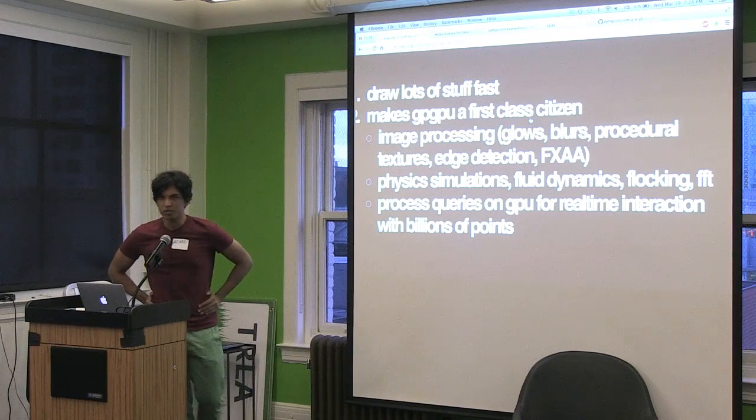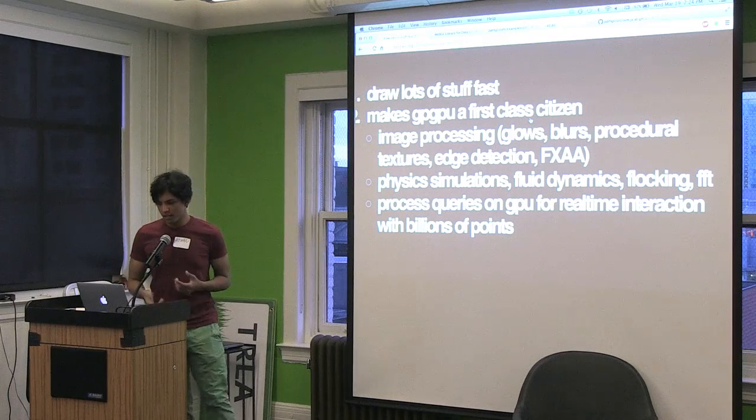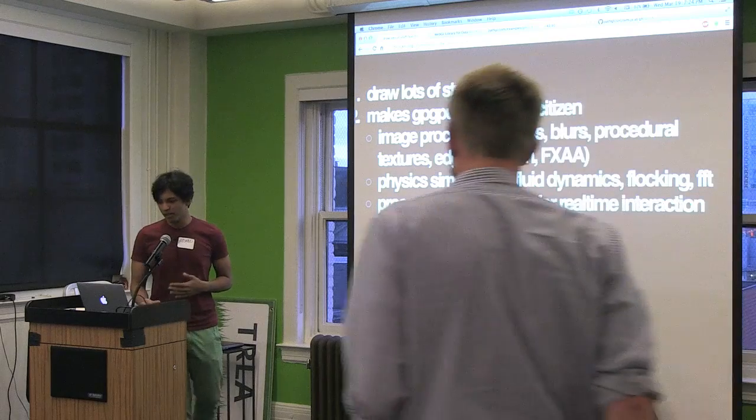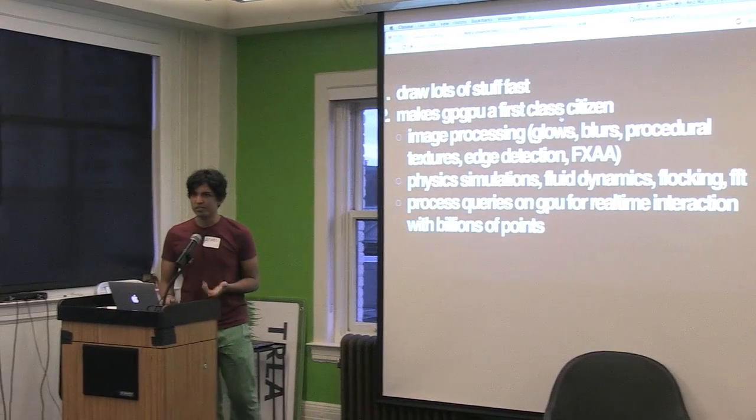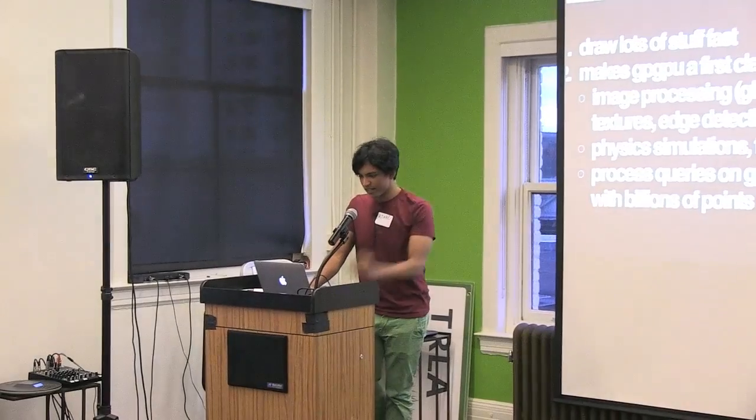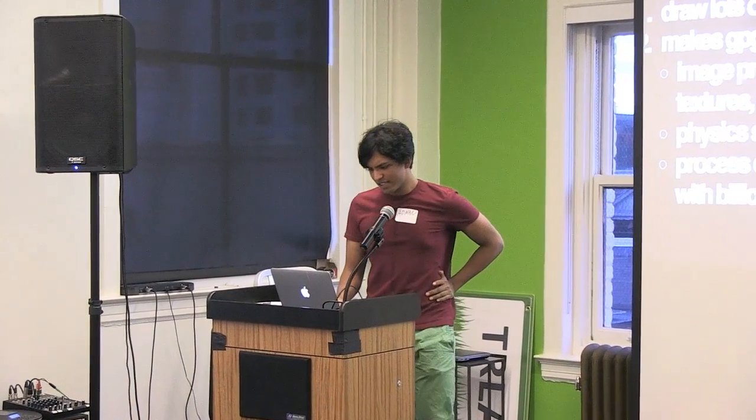The first GPU use case is image processing, which you'd use in visualization for visual effects — glows, blurs, procedural textures like smoke or water. The second is scientific computing or physics simulations, fluid dynamics — anything you'd do high-performance computing for, stuff that used to be on CUDA, which you can kind of port to WebGL now. The third, which I'm really focusing on, is processing visual queries on the graphics card so you can load huge datasets and brush through them and interact with them in real time.